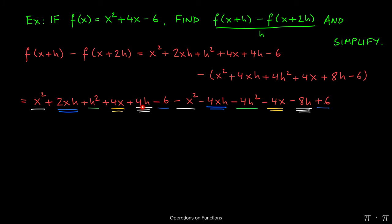And then penultimately, 4h minus 8h will give us negative 4h, and finally negative 6 and positive 6 will cancel each other out. So what's left over, as I said earlier, was negative 2xh minus 3h squared minus 4h. So this is our simplified numerator.